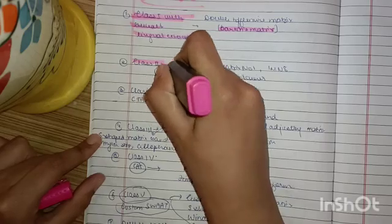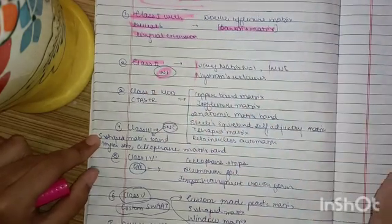Now, in Class 2, you must remember INI. Ivory, Nystrom, and Ivory matrix 8.